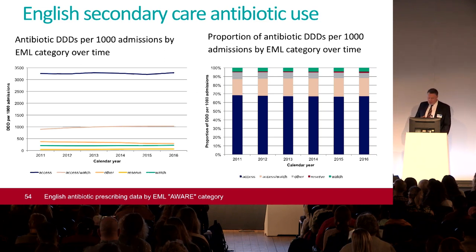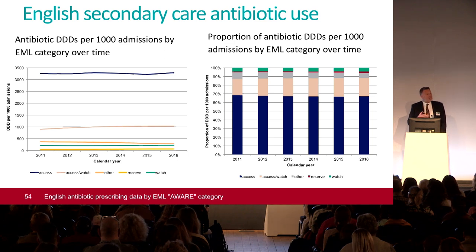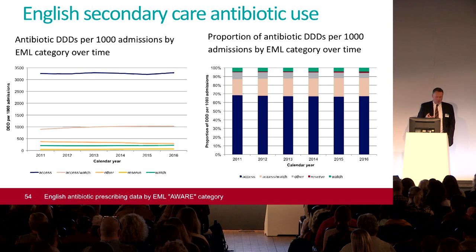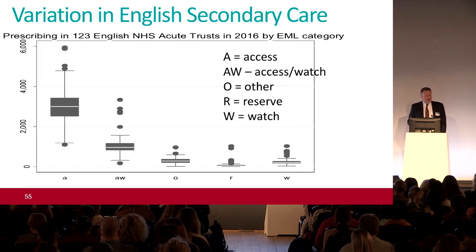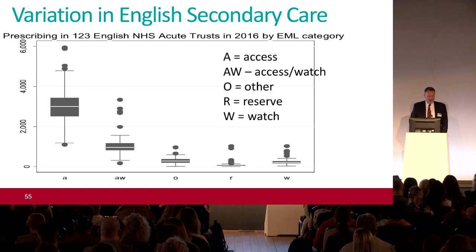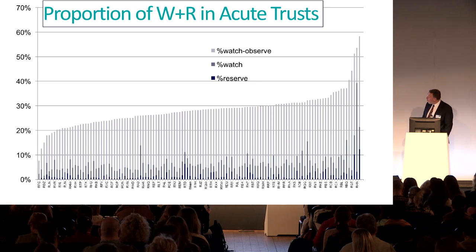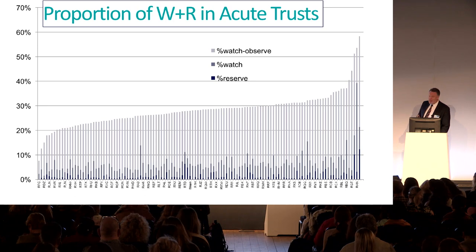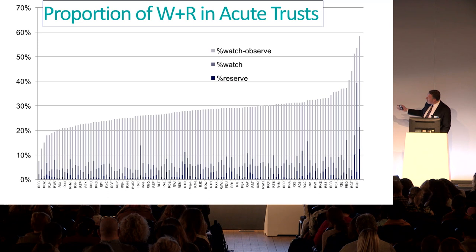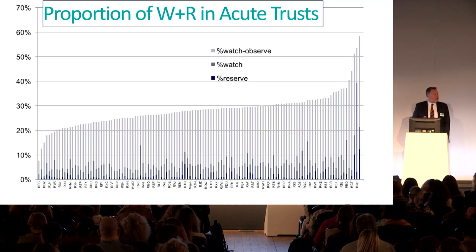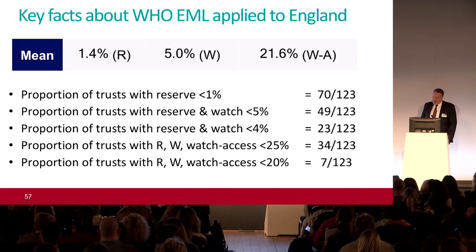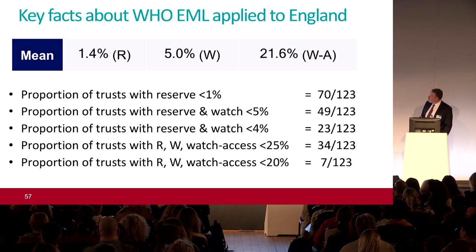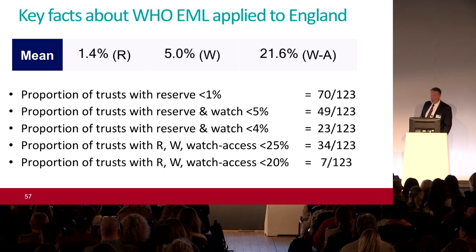In English secondary care, the Access group is staying roughly the same. The Watch list — which includes meropenem and piperacillin-tazobactam — shows a slow increase, though pip-tazo had been increasing and has come back down. Again there's huge variation across hospitals. Overall: under 2% of antibiotic use falls in the Reserve group, 5% in the Watch group, and 21% in the Watch-and-Access group based on the WHO list.